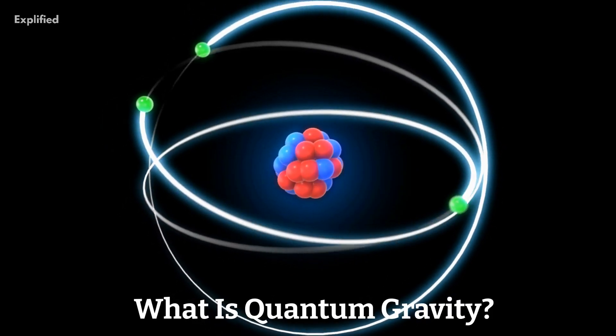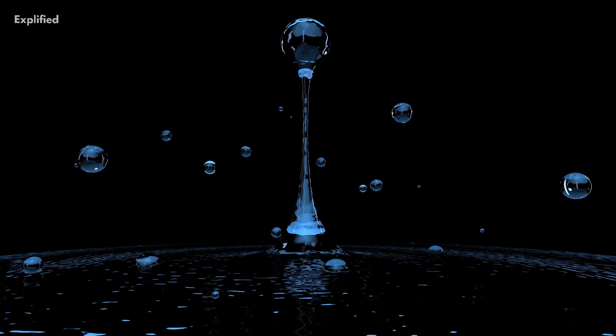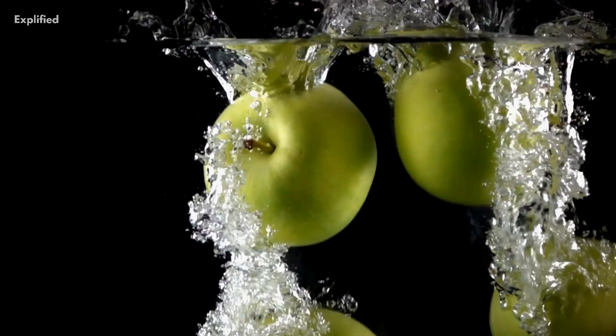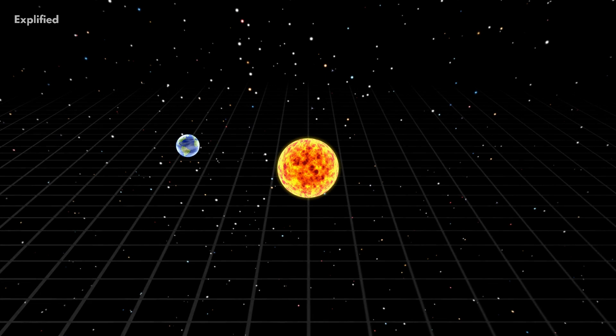What is quantum gravity? To understand quantum gravity, we first need to define what gravity is. Gravity is the force that attracts two objects with mass toward each other. It's what keeps us on the ground and what keeps the planets in orbit around the sun.